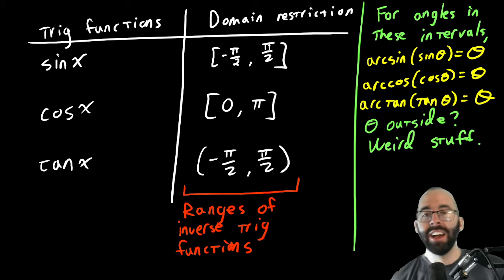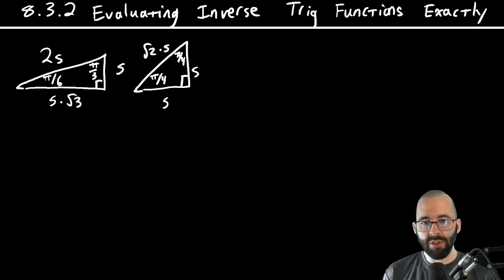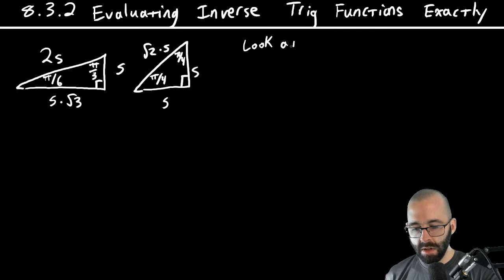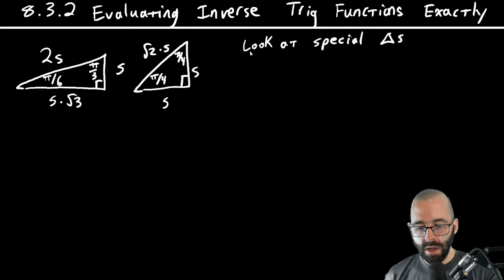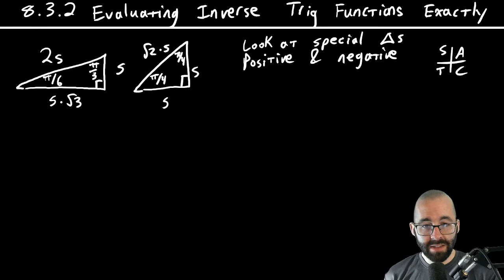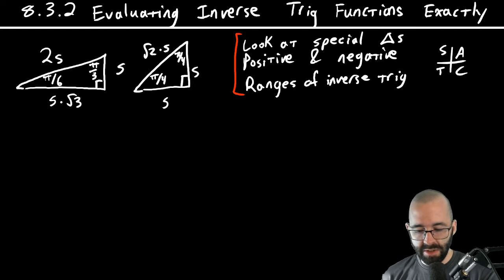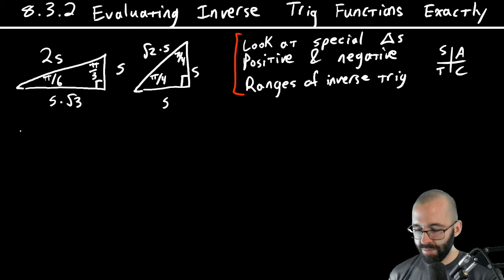We also have a table from the last video — we need to know the range of our trig functions because there are infinitely many angles that give a given ratio. So our strategy is: look at special triangles, consider positive and negative signs, use the mnemonic 'all students take calculus' to remember signs by quadrant, and always look at the ranges of the inverse trig functions. Those are the three things we need to solve these problems. Let's jump right into it.